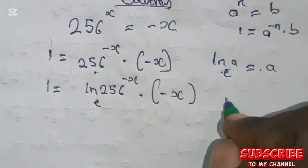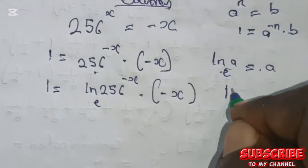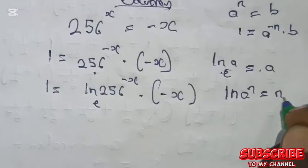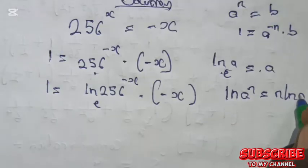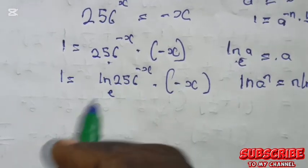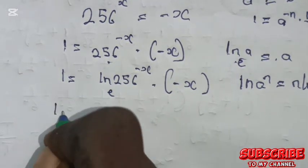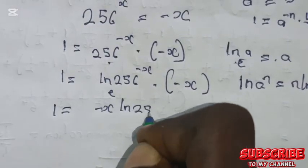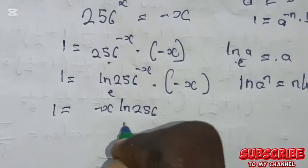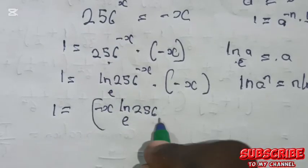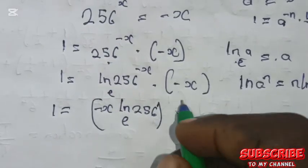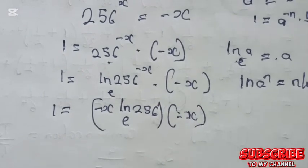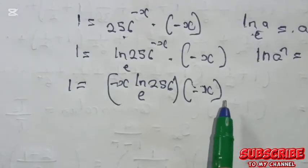Now using the law of logarithms: the natural log of a raised to the power of n equals n times the natural log of a. So here we are going to have 1 equals minus x times the natural log of 256 base e, multiplied by minus x.